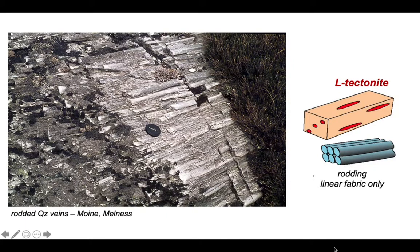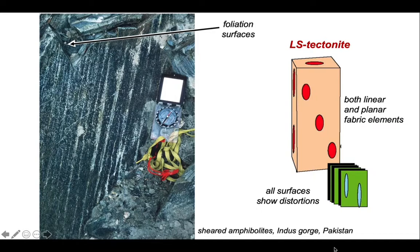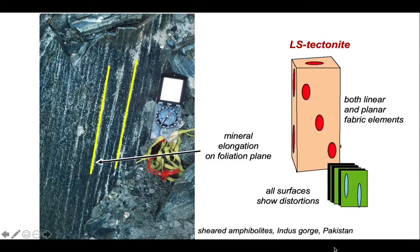Here's an example of an L-tectonite — looking onto an outcrop face, this rock almost looks like extruded toothpaste. Here's an example of an LS-tectonite. It's quite difficult to picture these in three dimensions — we're looking onto a foliation plane; the end of the outcrop is the side view. Looking down on the foliation plane you can see an elongation of the minerals, so this has got both a planar fabric which we're looking onto and on that planar fabric the minerals are streaked out. So it's also got a linear fabric — this is an LS-tectonite, having both linear and planar fabric elements.